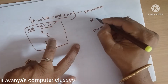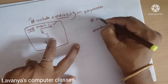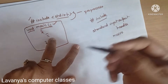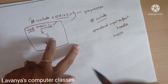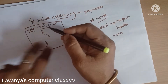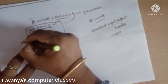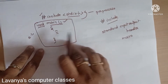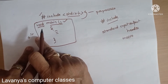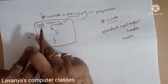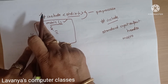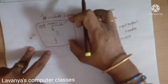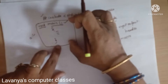The keyword 'include' means add. Hash-include adds something to your actual program. For example, a file named A.c — where C is the extension — is a source code in C language. That is your main actual program.